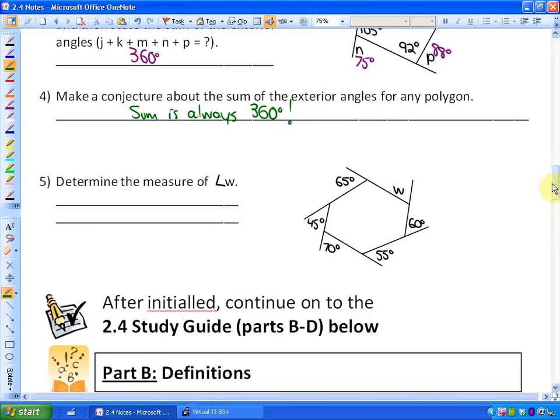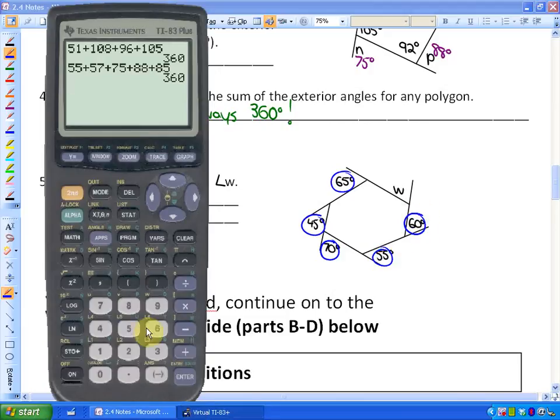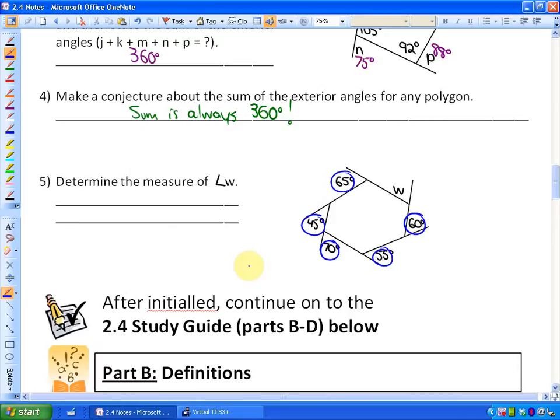And one last question before you go ahead and start working on the study guide. Step 5 says, determine the measure of angle W. Well, if we know all the angles except for angle W, I can add these all up. So if I add all of those angles up, I have 65 plus 45 plus 70 plus 55 plus 60. That's 295 degrees. So we know that W plus the 295 degrees equals 360. Or in other words, W is equivalent to 360 minus 295. So that's how we can apply this knowledge. It would be 65 degrees.